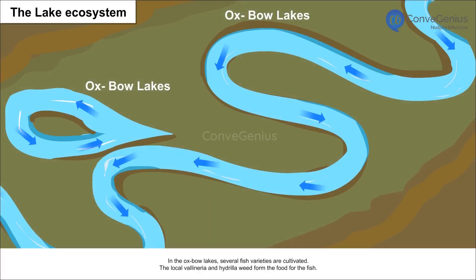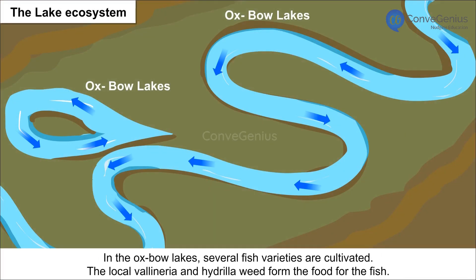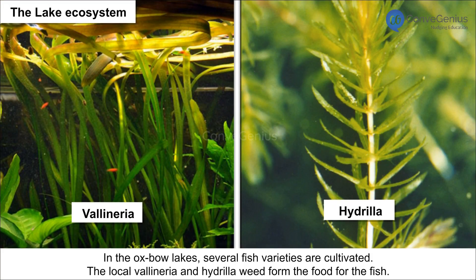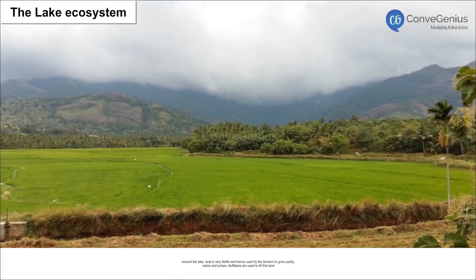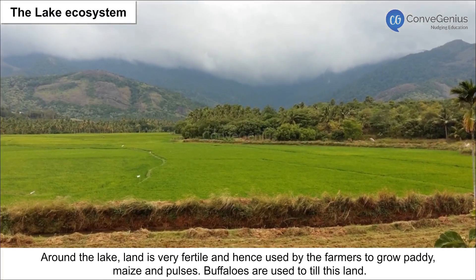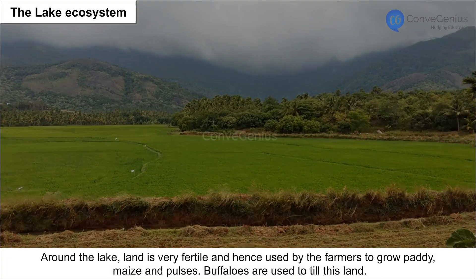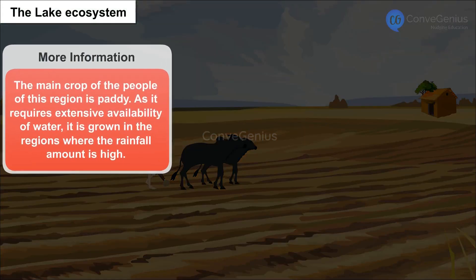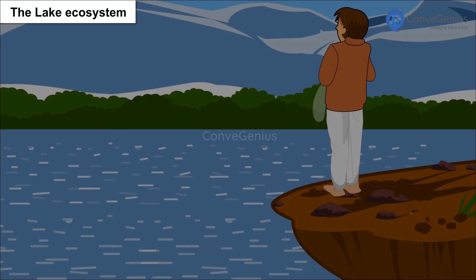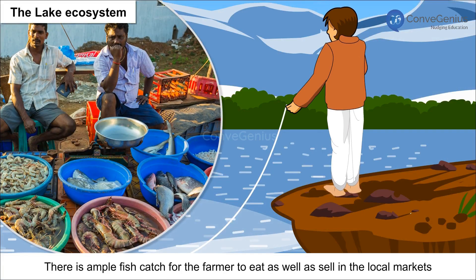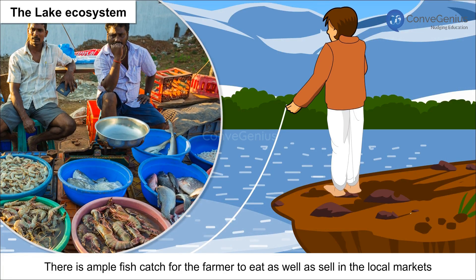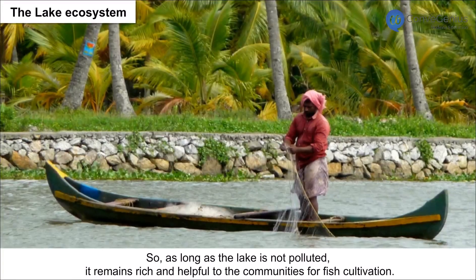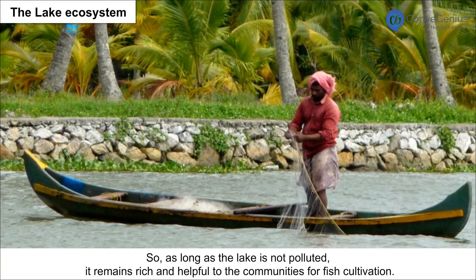The Lake Ecosystem. In the Oxbow lakes, several fish varieties are cultivated. The local Vallisneria and hydrilla weed form the food for the fish. Around the lake, the land is very fertile and hence used by farmers to grow paddy, maize and pulses. Buffaloes are used to till this land. There is ample fish catch for the farmer to eat as well as sell in the local markets. As long as the lake is not polluted, it remains rich and helpful to the communities for fish cultivation.